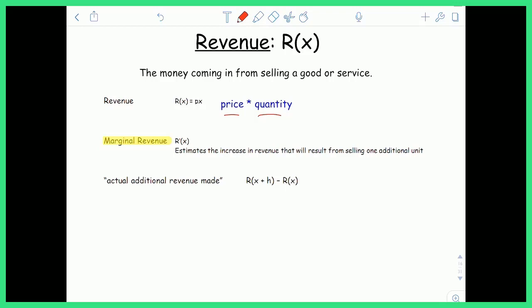Marginal revenue, same deal as marginal cost. When you see this word marginal, it means derivative. Marginal means derivative. Marginal revenue estimates the increase in revenue that will result from selling one additional unit. So one more. It's just an estimation, but the actual revenue can be calculated by just taking R of x plus h and subtracting R of x.